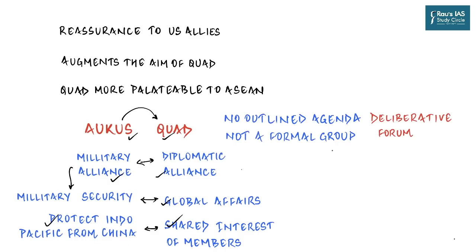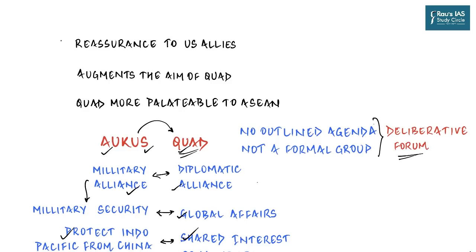Although QUAD members have their own security and military considerations vis-à-vis China, they have been reluctant to make it an explicit agenda in summits, giving QUAD a high probability of limiting itself to a mere deliberative forum. However, AUKUS has great potential to aid and assist QUAD in ways we cannot yet fully appreciate, and this reinforcement of QUAD because of AUKUS comes from three straightforward points.